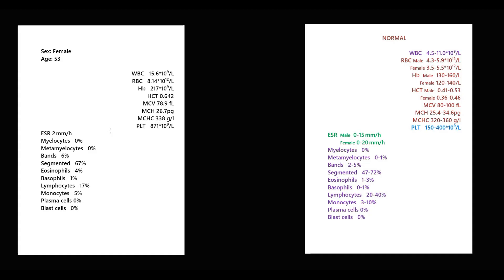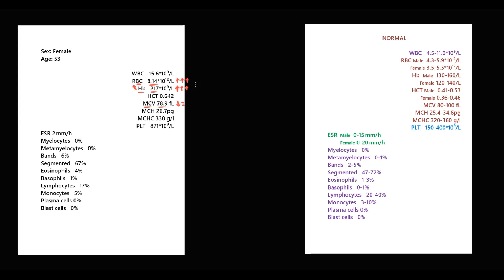The first value we are looking at is blood hemoglobin level: 217. Hemoglobin is significantly higher than normal. MCV is a little bit lower than normal, but because there is no anemia, it's not that important here. Usually when hemoglobin is elevated, red blood cell count is also elevated — and 8.14 red blood cells is a huge number.